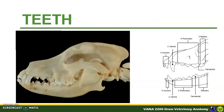Dog dentition is classified as diphyodont, meaning like any mammals they have two sets of teeth, a temporary and a permanent teeth. The dentition is also classified as heterodont, meaning the dentition is composed of various types of teeth that are specialized for different aspects of prehension and mastication. For example, they have incisors, canine, and the cheek teeth.